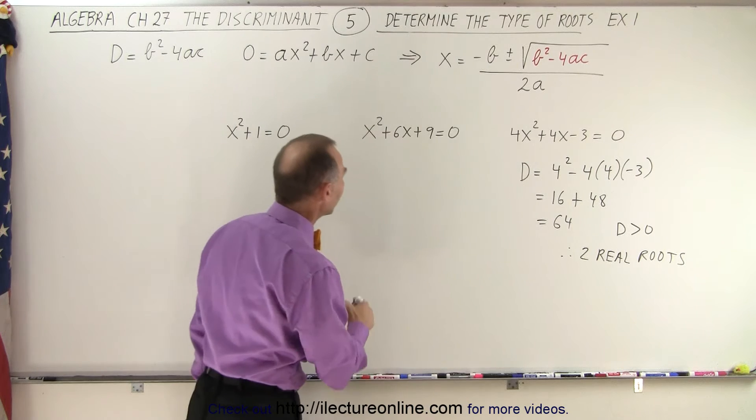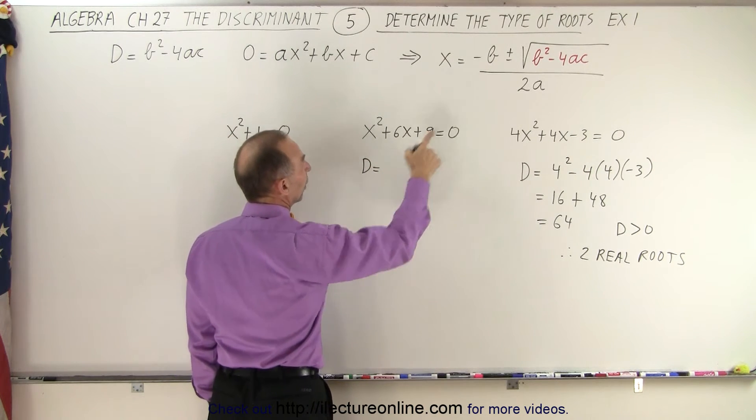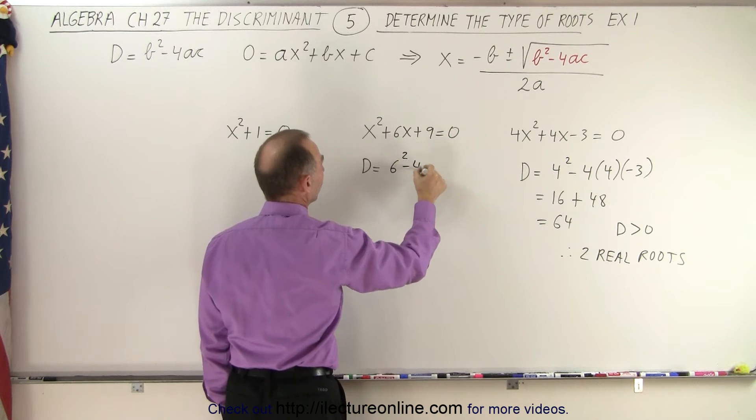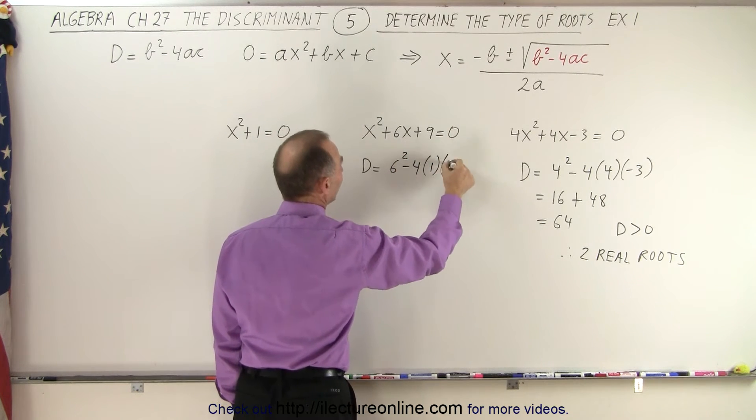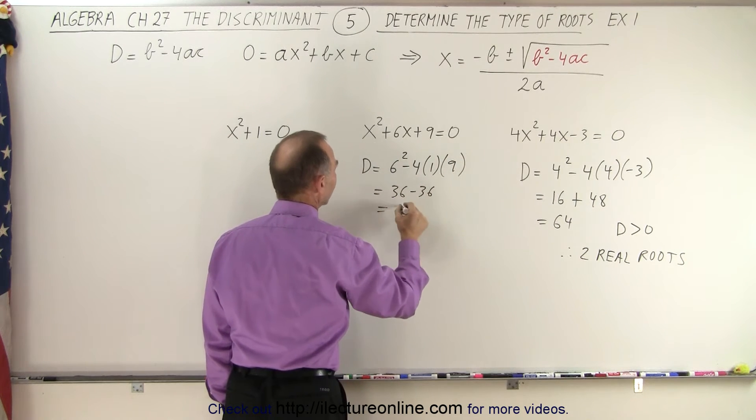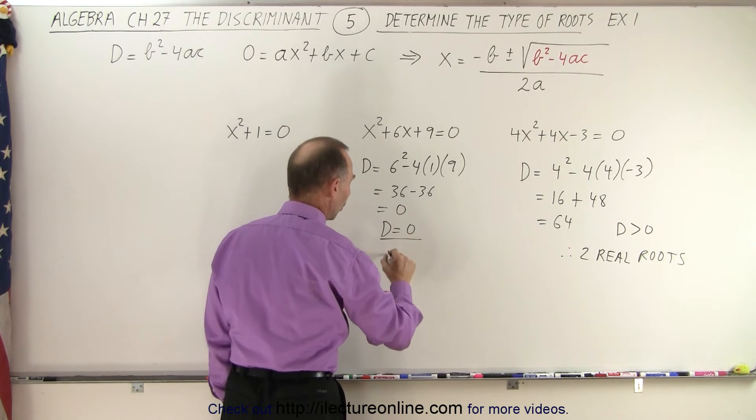All right, our next example. Again, calculating the discriminant. D is equal to b squared minus 4ac. That's 6 squared minus 4 times a times c, which is 9. So this is 36 minus 36, which is equal to 0. So D equals 0, which means there's only one real root.